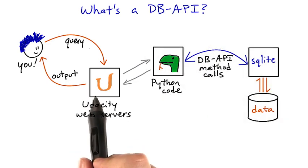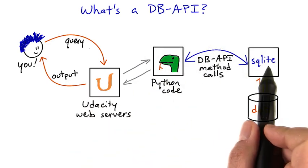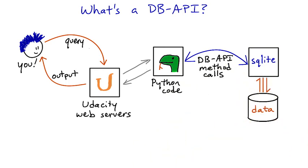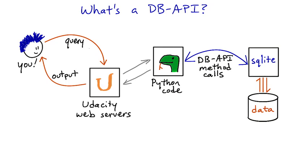Behind our web server, we're running Python code that connects to an SQLite database using DBAPI calls. The Python DBAPI isn't a library — it's a standard for Python libraries that lets your code connect to databases. There are dozens of different libraries for different database systems that follow this standard. The standard specifies what functions you'll call to connect to a database, to send queries, and to get results.